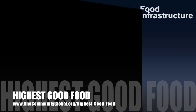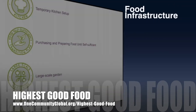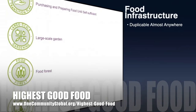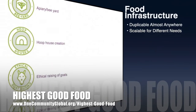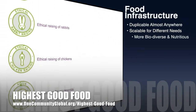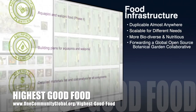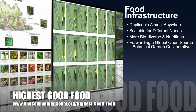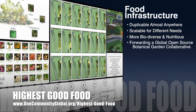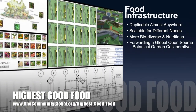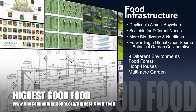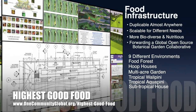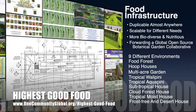One Community's approach to highest good food is duplicable almost anywhere, scalable for different needs, more biodiverse and nutritious, part of forwarding a global open source botanical garden collaborative, and includes nine different free shared and duplicable growing environments.